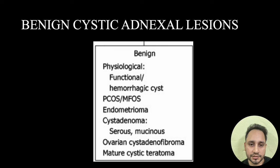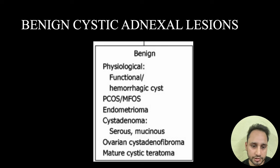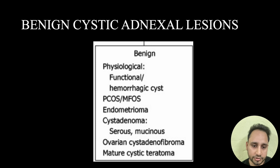Benign cystic adnexal lesions — physiological types include functional or hemorrhagic cysts, PCOS/MFOS, endometrioma, cystadenoma including serous or mucinous, ovarian cystadenofi­broma, and mature cystic teratoma.